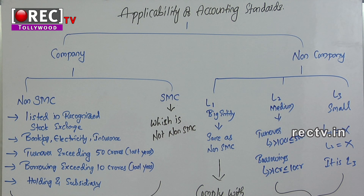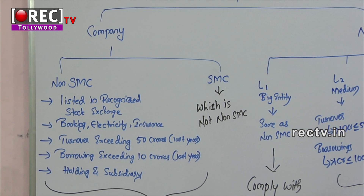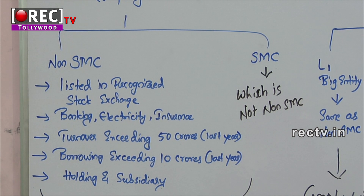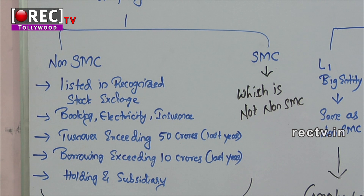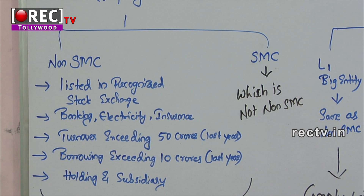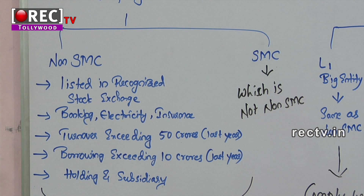The applicability of accounting standards is divided into two types: company and non-company. Companies are further divided into two types: Non-SMC and SMC. Non-SMC means which is not a small company. To be a non-SMC, any one of the following must be satisfied: it is listed on a recognized stock exchange, or it is a banking, electricity, or insurance company, or its turnover exceeds 50 crores in the last year, or its borrowings exceed 10 crores.